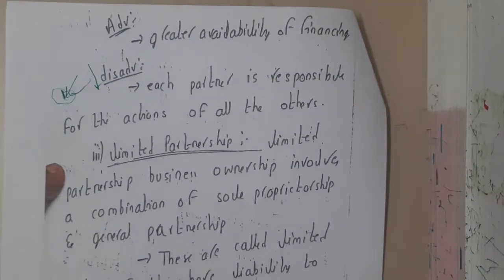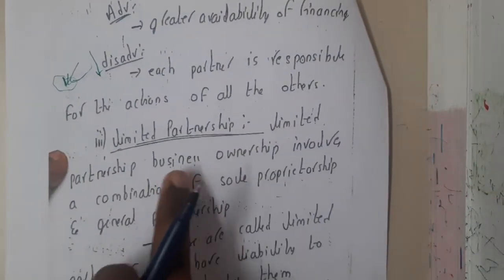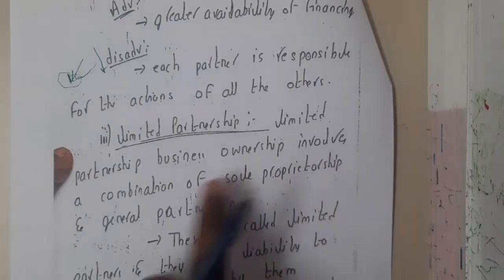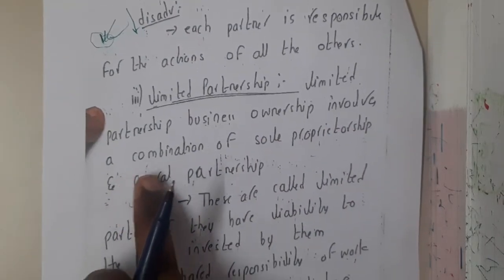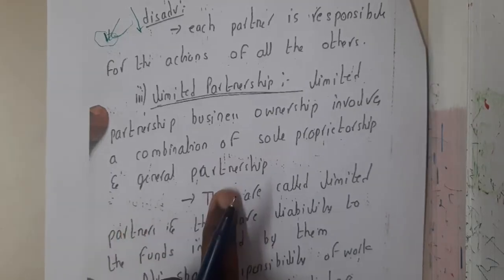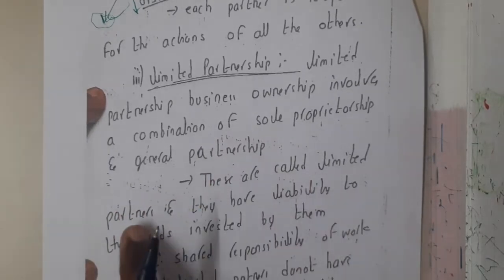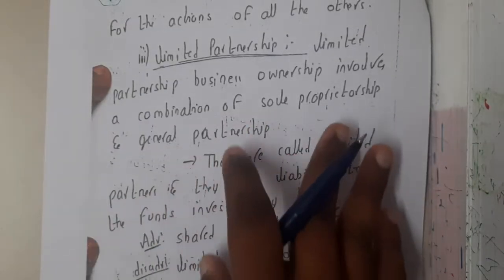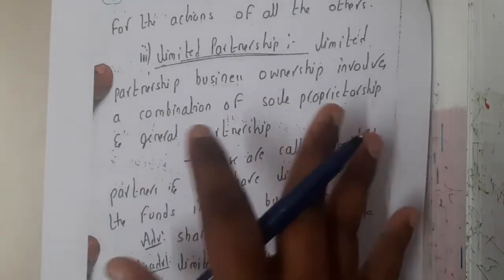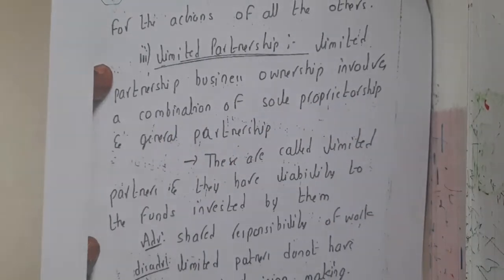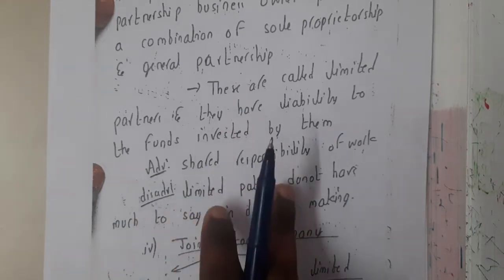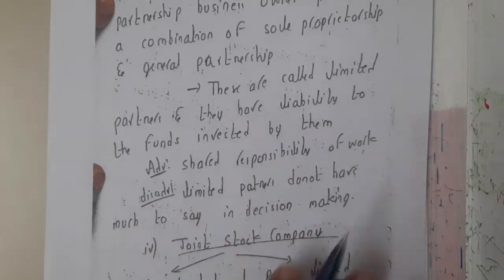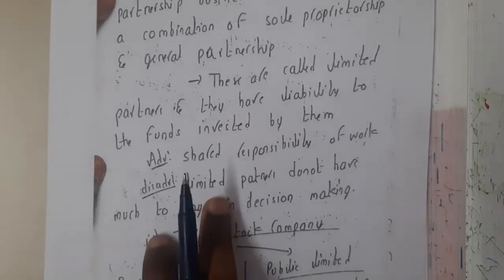The next type is limited partnership. A limited partnership involves a combination of a sole proprietor and a general proprietor. They have liability limited to the funds invested by them. Not all partners are equal — there is a general proprietorship who is the boss. The advantage here is shared responsibilities of work.